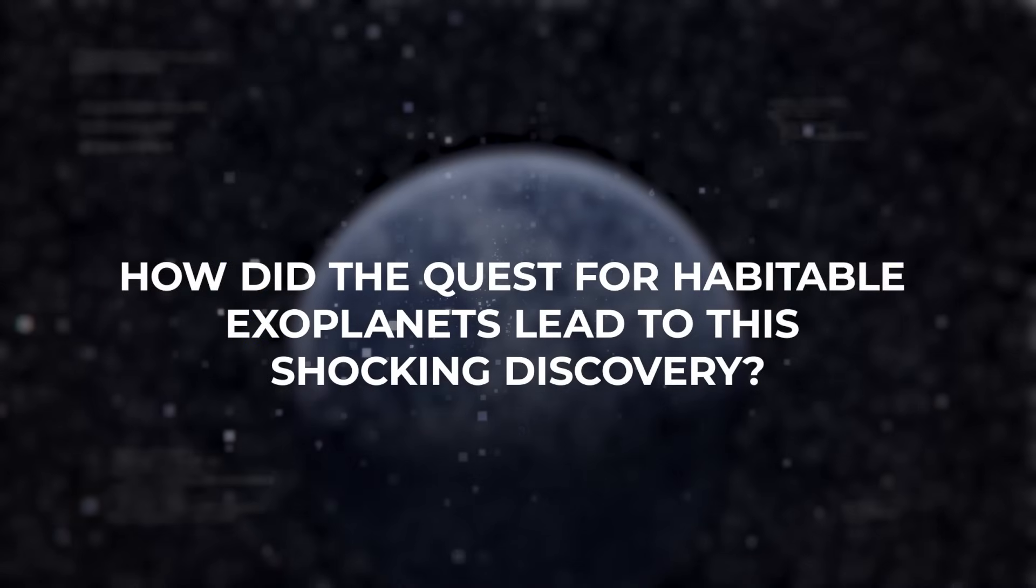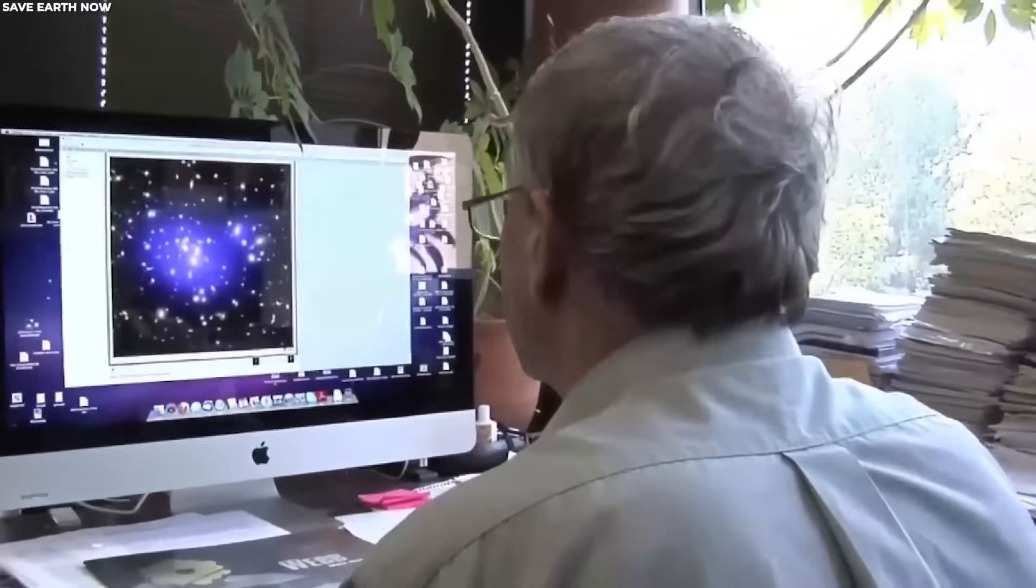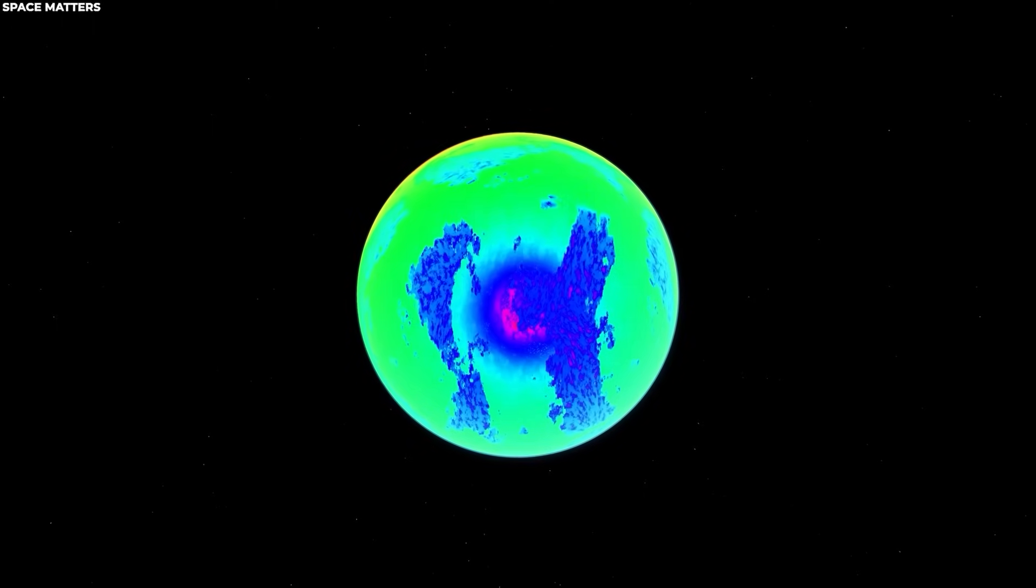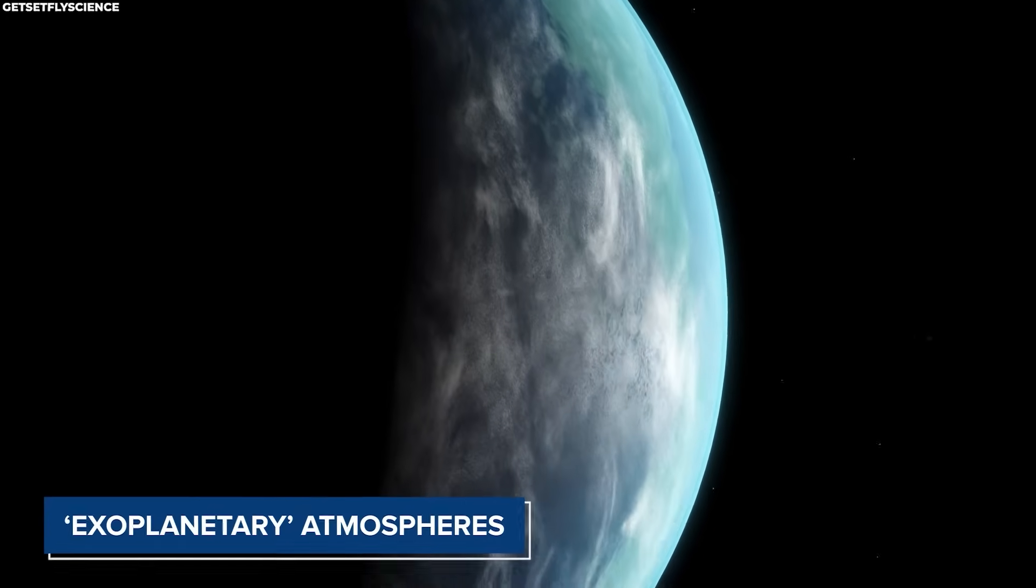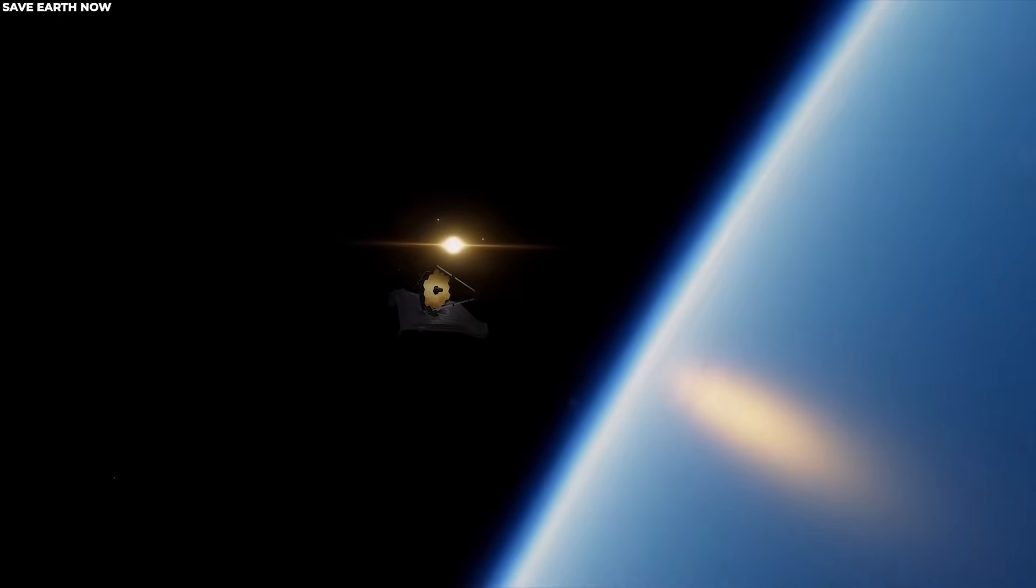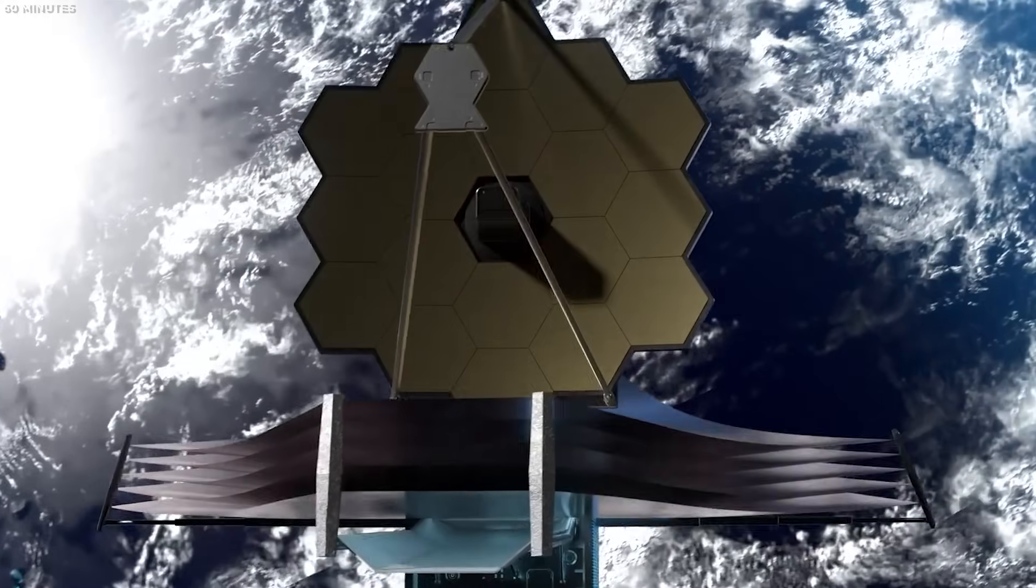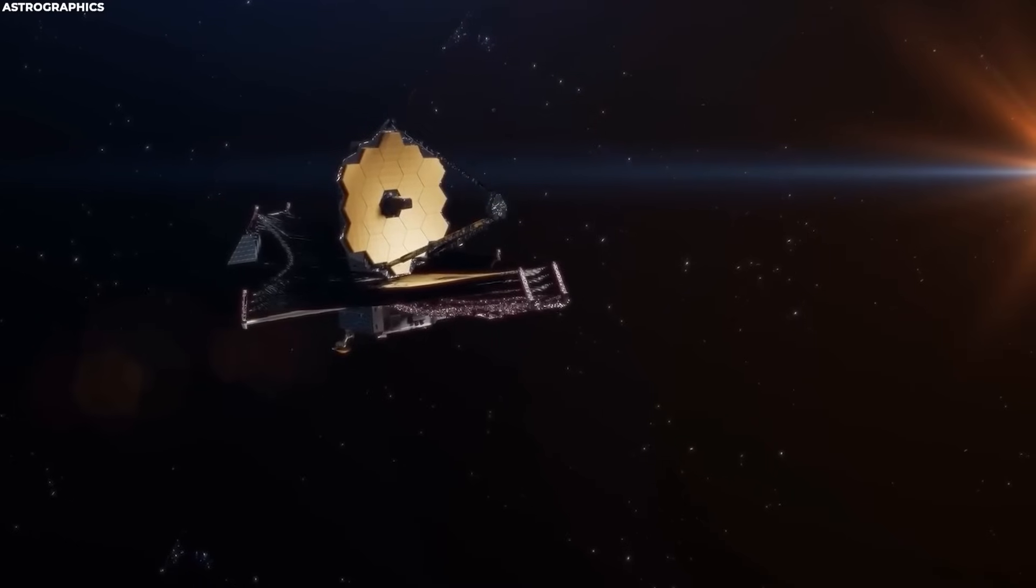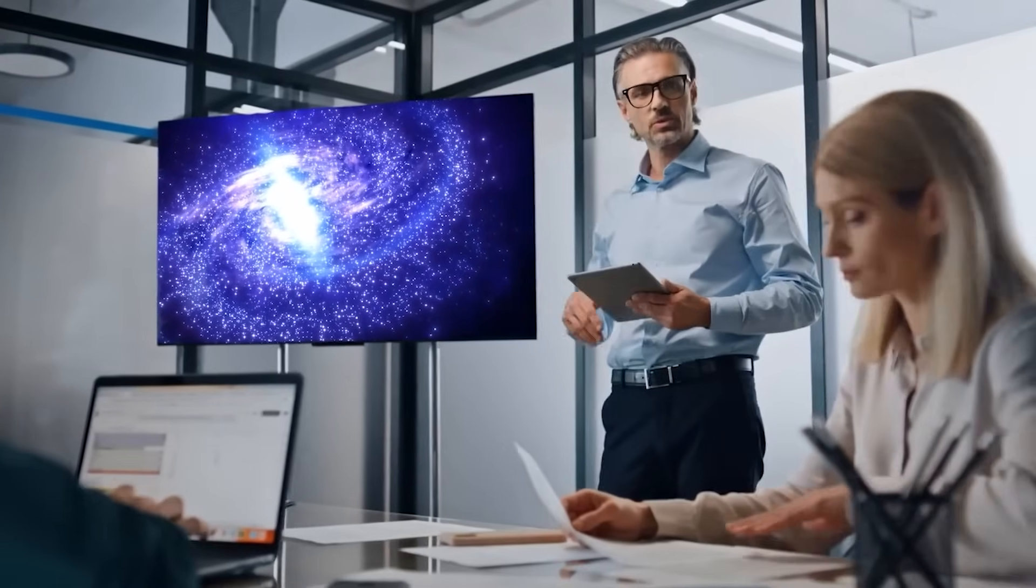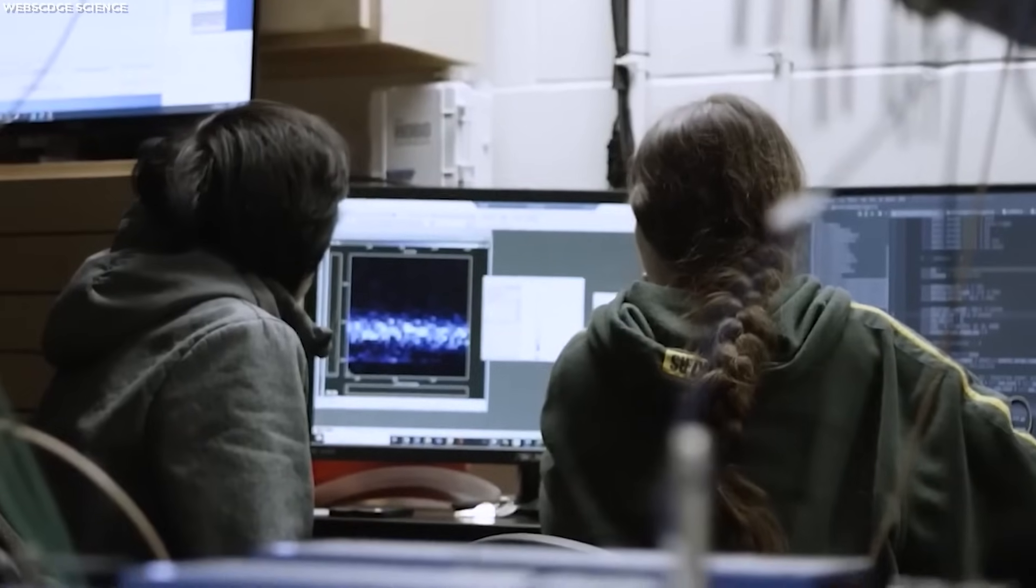How did the quest for habitable exoplanets lead to this shocking discovery? The quest for habitable exoplanets has led to a shocking discovery that goes beyond producing visually stunning images. Direct imaging of exoplanets serves as a vital endeavor to understand planetary formation processes and the compositions of exoplanetary atmospheres. This research holds the potential to identify exoplanets with conditions conducive to habitability. By observing the oldest galaxies, the JWST has achieved another remarkable feat. These galaxies originated when the universe was in its infancy, just 2% of its current age, and are located approximately 13.4 billion light-years away from Earth.